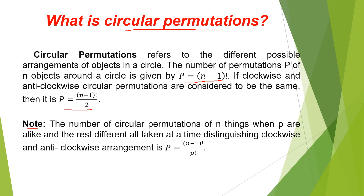Note: the number of circular permutations of n things when p are alike and the rest are different, all taken at a time distinguishing clockwise and anticlockwise, the arrangement is P equals (n minus 1) factorial over p factorial.